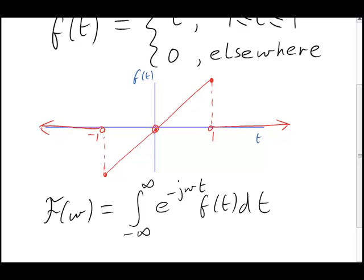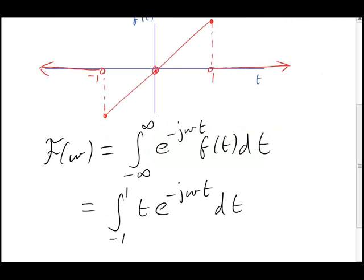Between negative 1 and 1, though, f is now t, whereas in my first example it was the constant 1. So the integral boils down to this one.